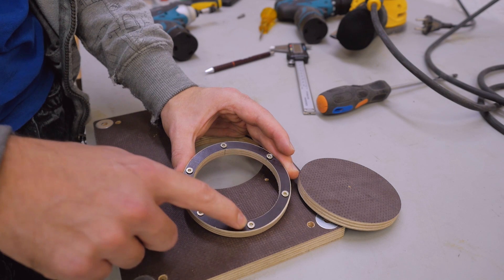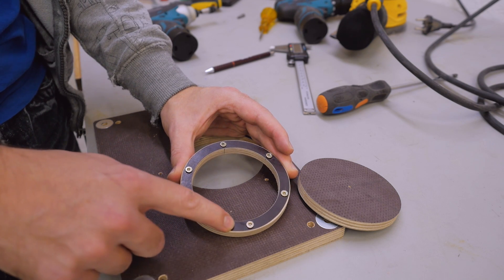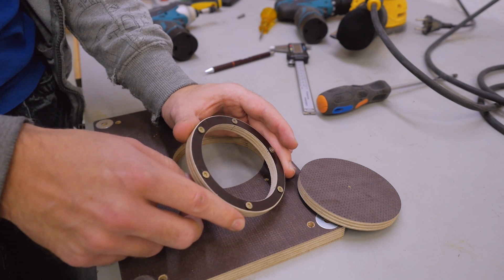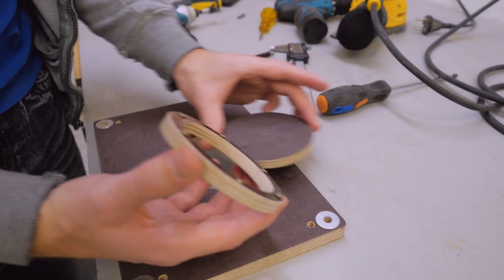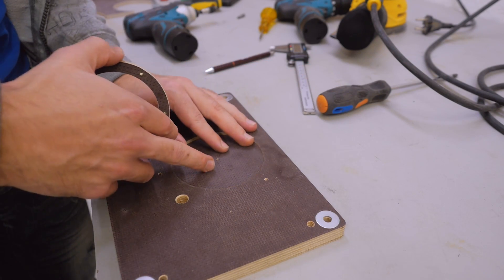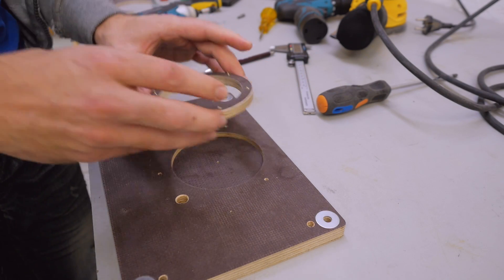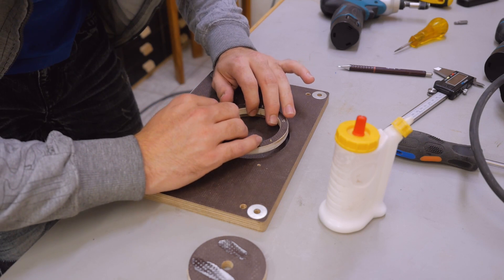I countersunk the holes so that I can make the screw heads flush with this surface. I let them protrude a little bit now, and now I insert the actual insert plate and now I can glue this ring in place.